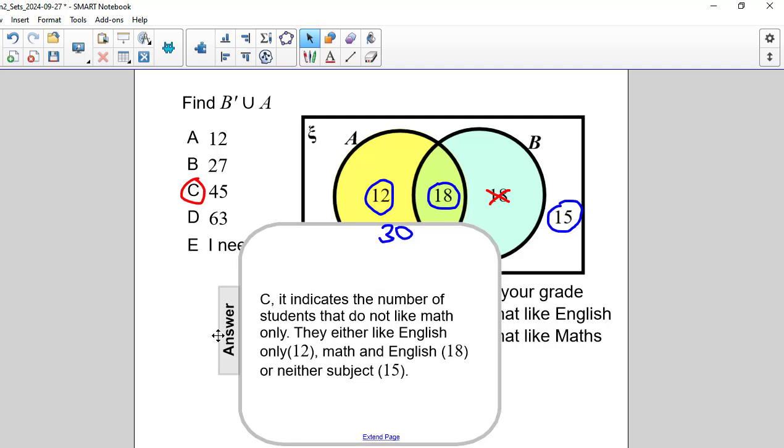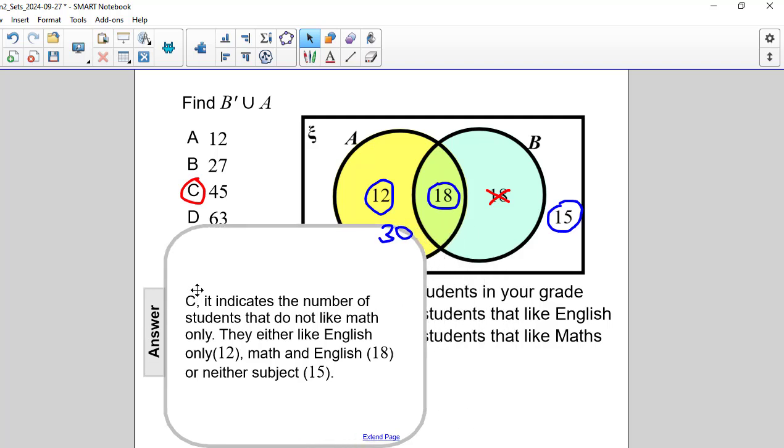And I'll just bring this out here for a recap. Answer choice C indicates the number of students that do not like math only. It also indicates that they either like English only, there would be 12.